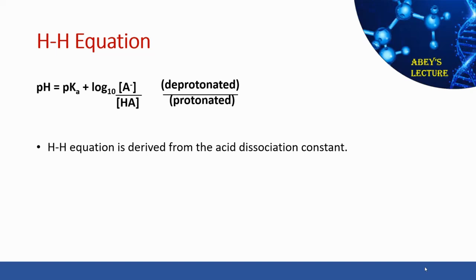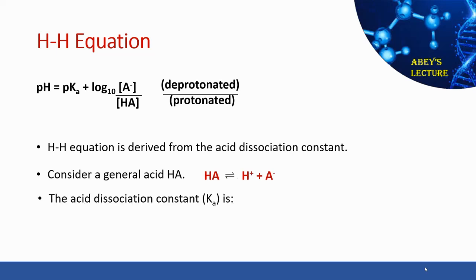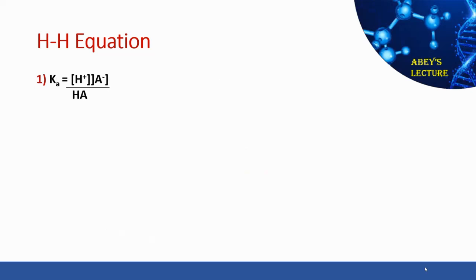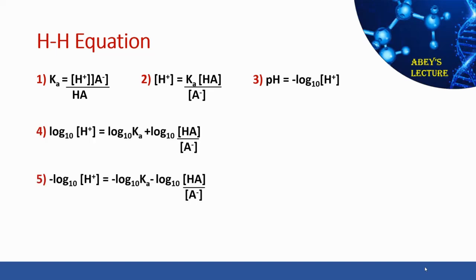The Henderson-Hasselbalch equation is derived from the acid dissociation constant. Consider a general acid HA — when added to water, it dissociates into H⁺ and A⁻. The acid dissociation constant Ka equals products over reactants (equation 1). Rearranging to get [H⁺] gives equation 2. Since pH equals negative log of [H⁺], rearranging further gives equation 3, which simplifies to the Henderson-Hasselbalch equation (equation 6).